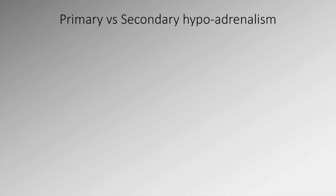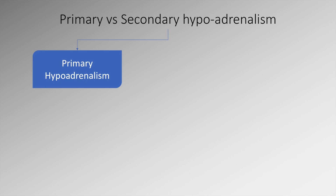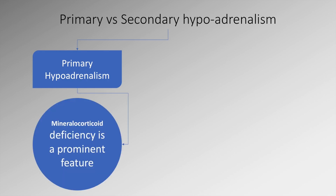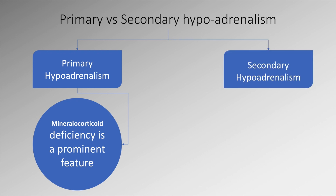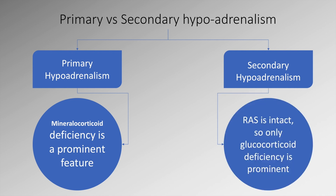The main difference between primary and secondary adrenal insufficiency or hypoadrenalism is that in primary adrenal insufficiency, mineralocorticoid deficiency is a prominent feature. Whereas in secondary hypoadrenalism, mineralocorticoid deficiency is not prominent because the renin-angiotensin system is intact.